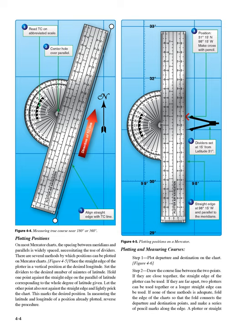Figure 4-5. Place the straight edge of the plotter in a vertical position at the desired longitude. Set the dividers to the desired number of minutes of latitude. Hold one point against the straight edge on the parallel of latitude corresponding to the whole degree of latitude given. Let the other point also rest against the straight edge and lightly prick the chart. This marks the desired position. In measuring the latitude and longitude of a position already plotted, reverse the procedure.